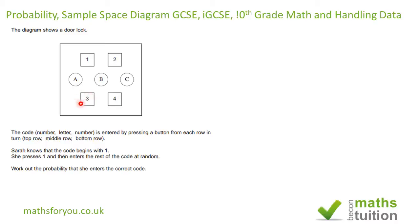It says Sarah knows that the code begins with one, which means the number two is redundant — we don't need number two at all. She presses one and then enters the rest of the code using the middle row and the bottom row.